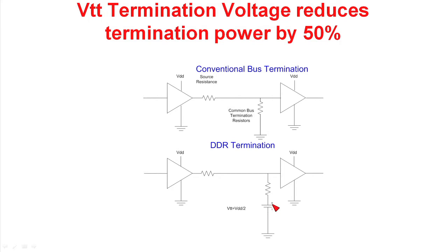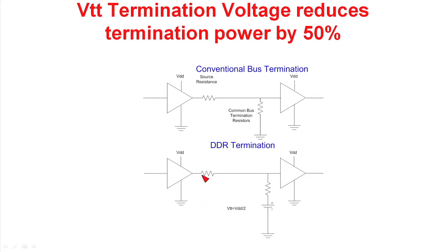To reduce the power loss in the termination resistors, a second power supply is used in double data rate memory. Here we have our source resistor driving our bus capacitance, and now we've taken our termination resistor from the end of the bus and tied it to a power supply that operates at half the supply voltage. In this case, you have equal dissipation in the resistors whether the driver is high or low. If you run at 50% duty factor, you'll find that you have half the dissipation in these resistors compared to conventional bus termination.